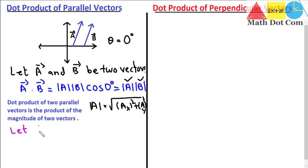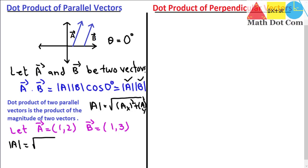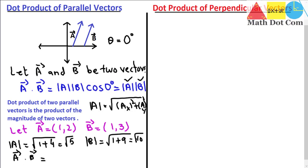For example, let vector a have components (1, 2) and vector b have components (1, 3), and it is given that these two vectors are parallel. The magnitude of a equals the square root of 1 plus 4, which is the square root of 5. The magnitude of b equals the square root of 1 plus 9, which is the square root of 10. So the dot product equals the square root of 5 times the square root of 10.